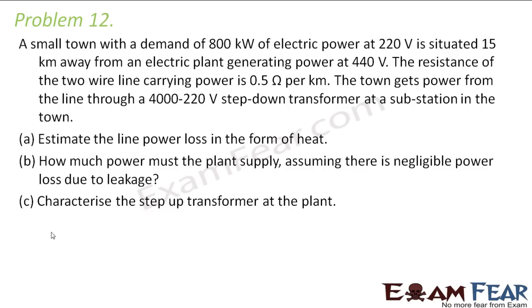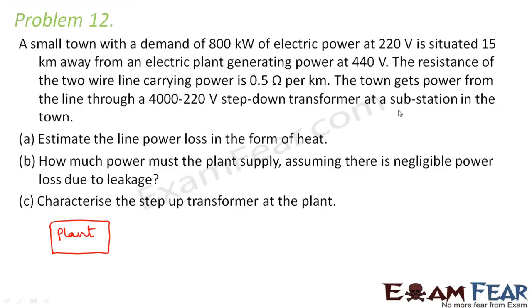Let us draw the diagram which will make things simple. This is the electric plant which is generating power. The resistance of the two wire line carrying power is 0.5 ohms per kilometer. The town gets powered from a line through a 4000 to 220 volt step-down transformer at a substation in the town.